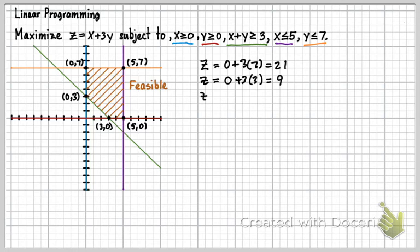And then the third one is going to be (3,0). So that's going to be 3 plus 3 times 0, and that's going to be 3.